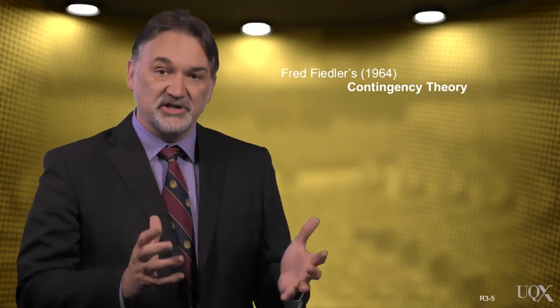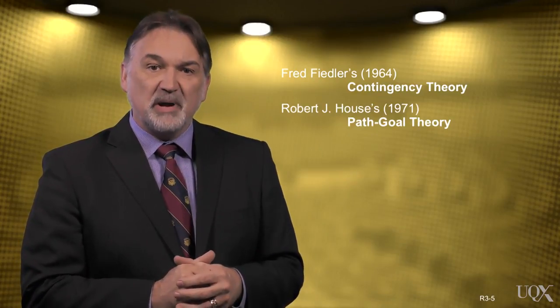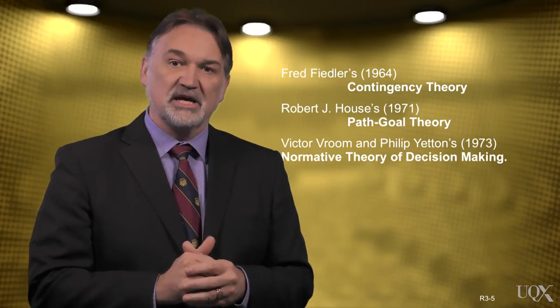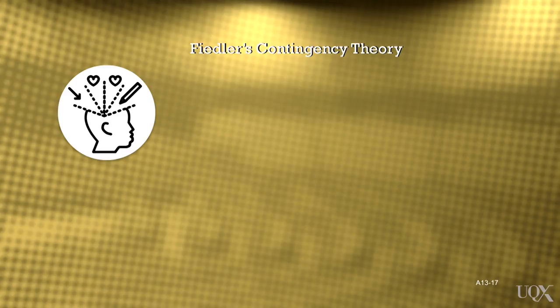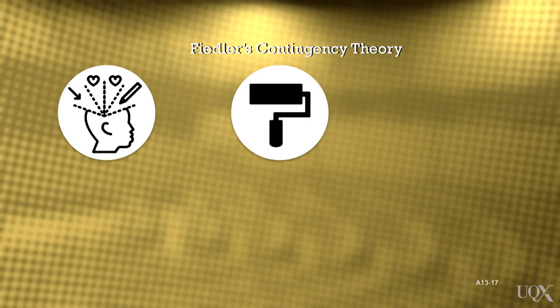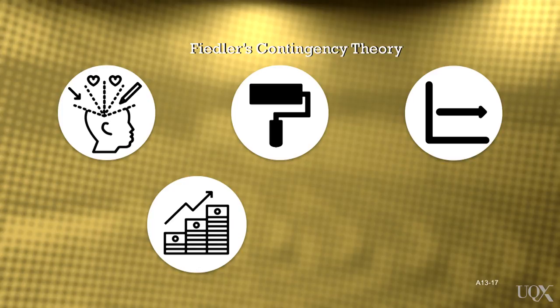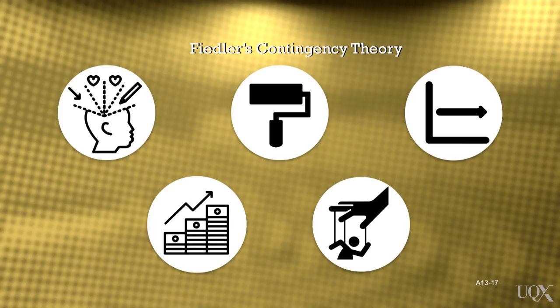Three of the most notable theories of this era were Fiedler's contingency theory, House's path-goal theory, and Vroom-Yetton's normative theory of decision making. Fiedler believed that a leader's traits or characteristics, and the way in which they applied these behaviourally, were fairly static, and therefore leaders needed to be placed in particular situations which suited these characteristics, or alternatively, leaders must be trained to manipulate situations in order to change them to suit their particular style.